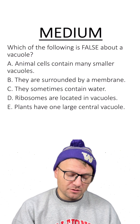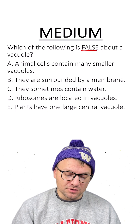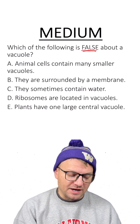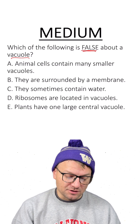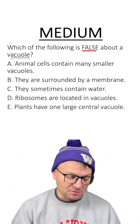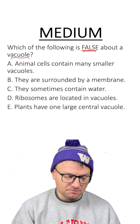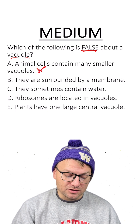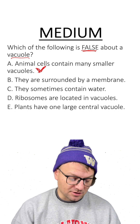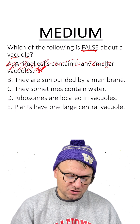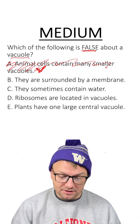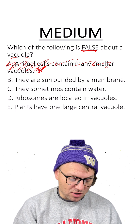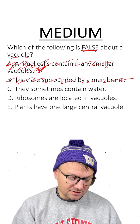Here's the medium question. Which of the following is false about a vacuole? A: Animal cells contain many smaller vacuoles — that is correct, so that's not our answer. B: They are surrounded by a membrane — that is true, so that's not our answer.